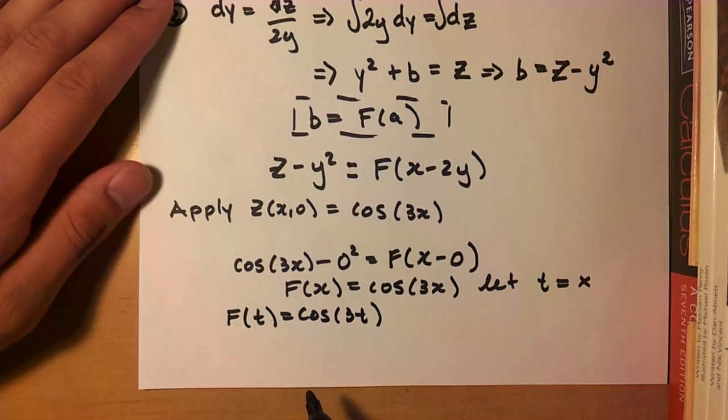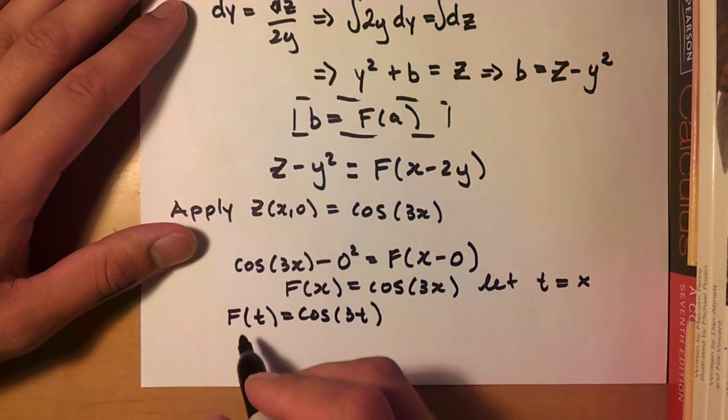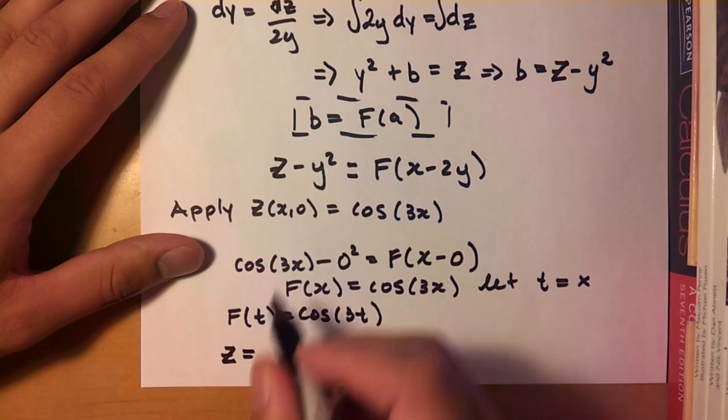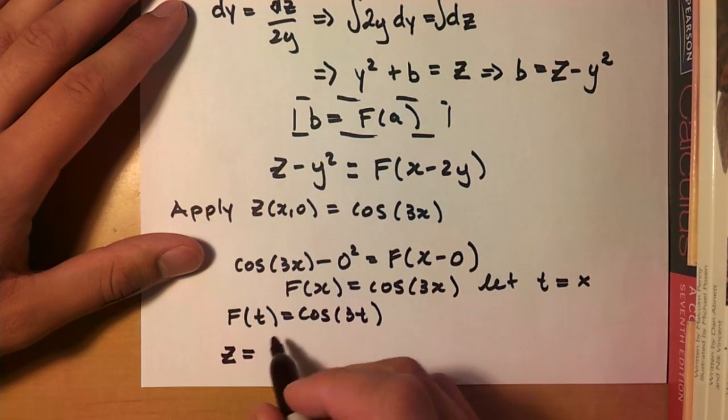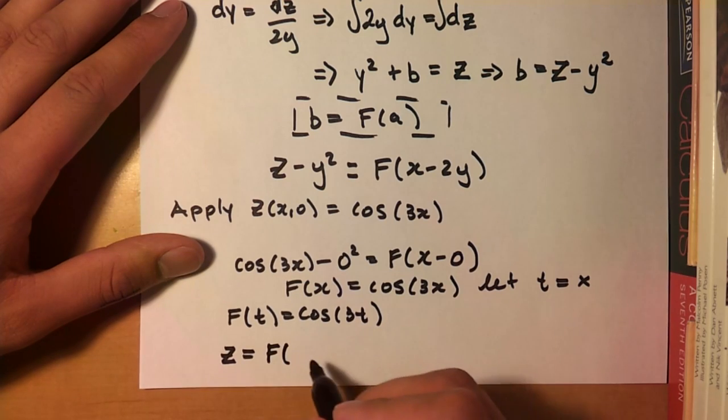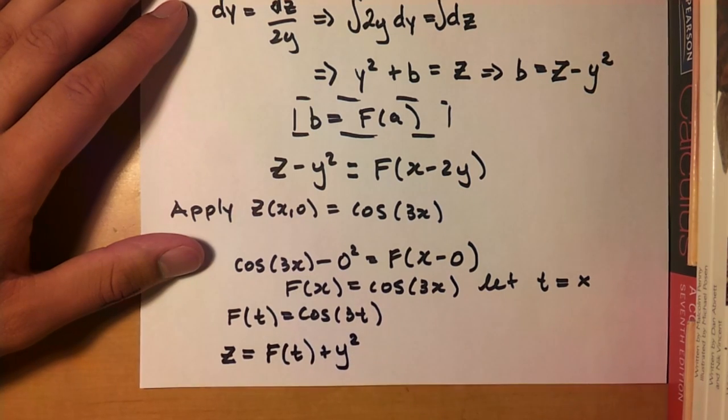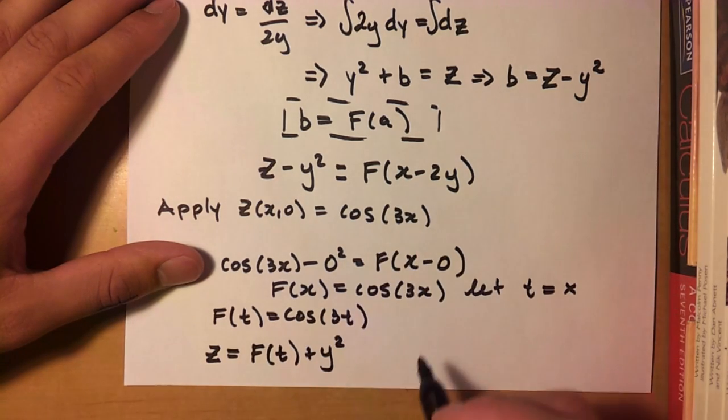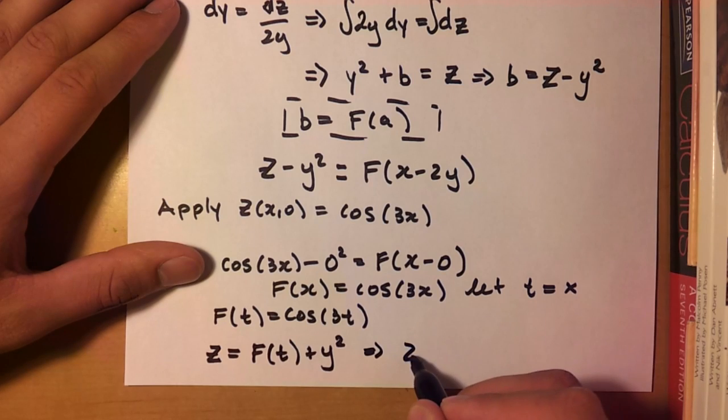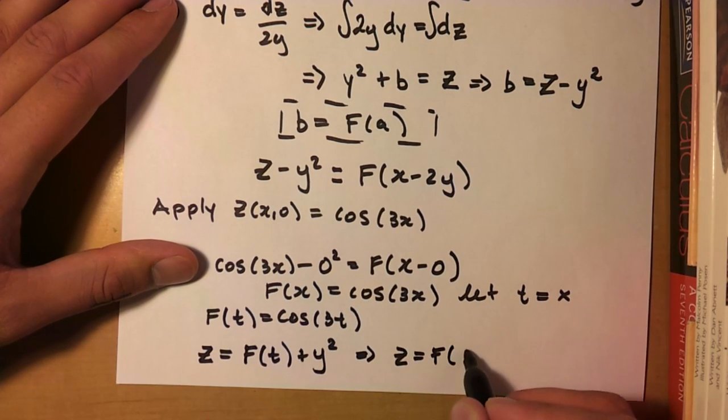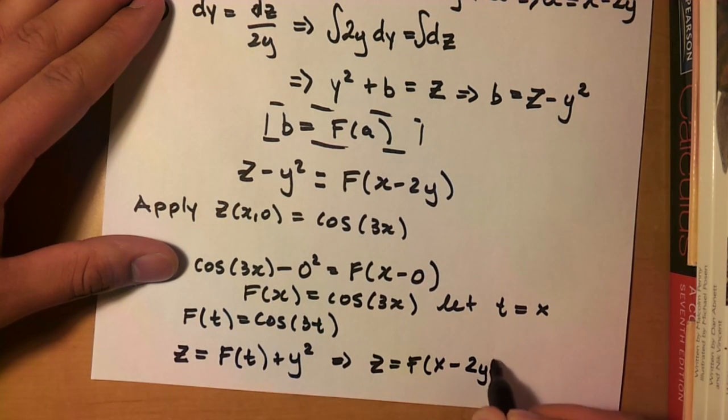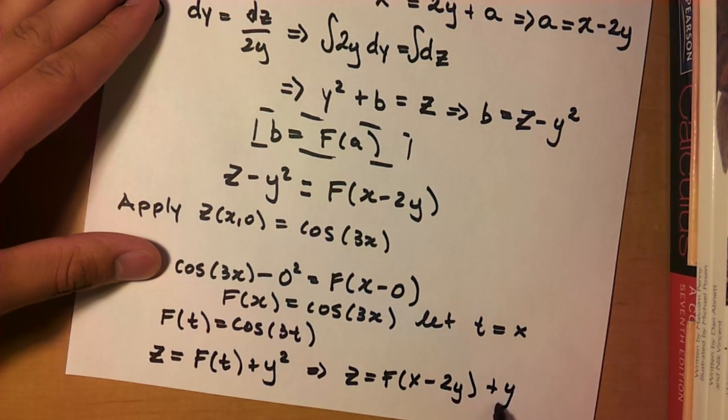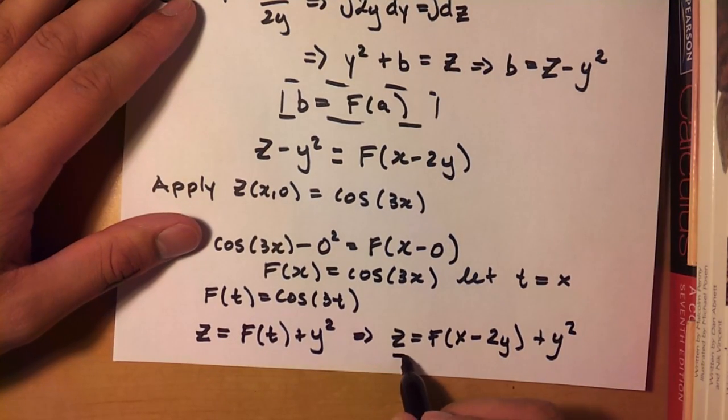So we're nearly done. We just have to do the last thing, which is just substitute it back into our old equation. So you have z. I'm just going to isolate z by itself by bringing y over onto this side. So then you have f of t, right, plus y squared. Alright, but this isn't the form we want. We want the form in x minus 2y. So this is where you replace t with x minus 2y.